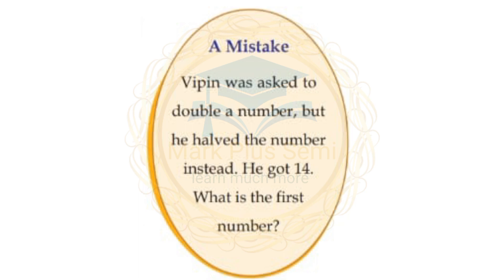Next: a mistake. Vibin was asked to double a number but he halved the number instead. He got 14. What is the original number?